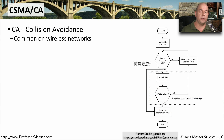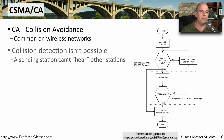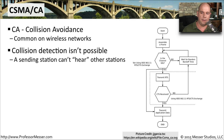With CSMA/CA, we still have the carrier sense multiple access, but in this case the CA at the end stands for collision avoidance. This is a very common way to communicate over wireless networks, because we're not able to detect when a collision might occur. Whenever we're transmitting out of our wireless connection, we're effectively overloading our local receiver, and we can't hear if anybody else might be transmitting at the same time.